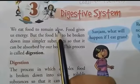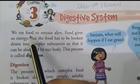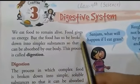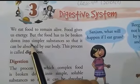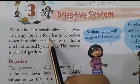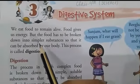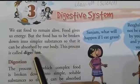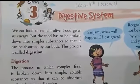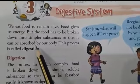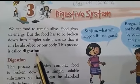We eat food to remain alive. Food gives us energy. But the food has to be broken down into simpler substances so that it can be absorbed by our body. We call this process digestion.